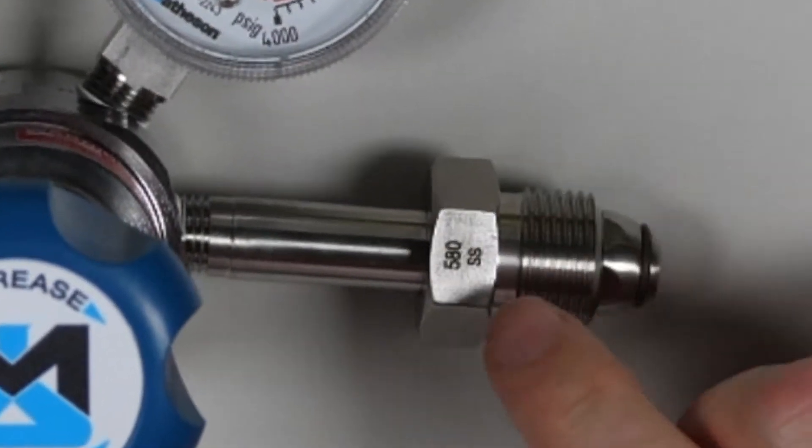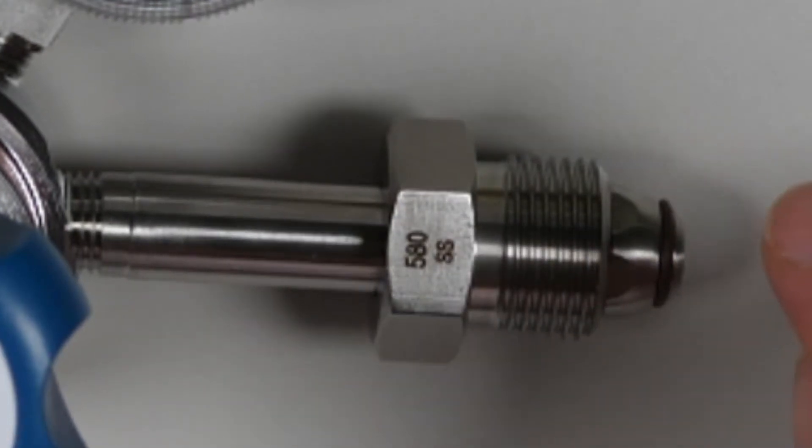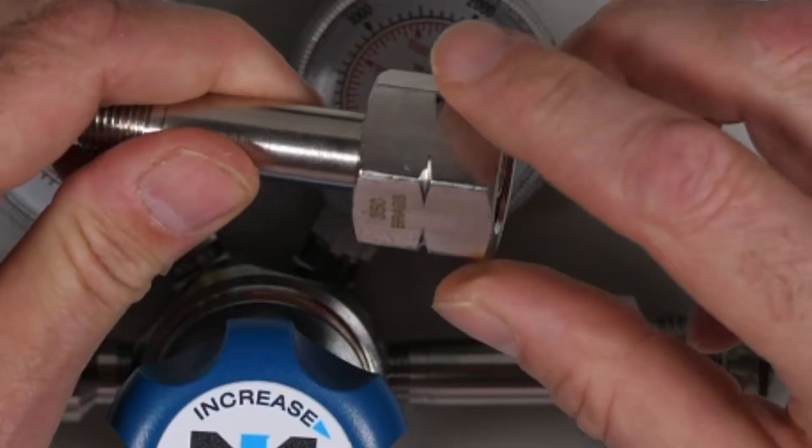The CGA designation number is engraved on the nut. CGA 580 is for inert gases like nitrogen, helium, and argon.